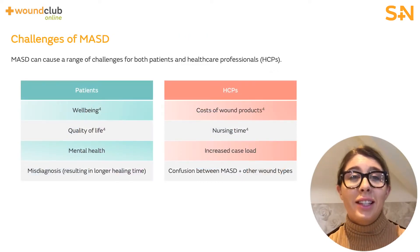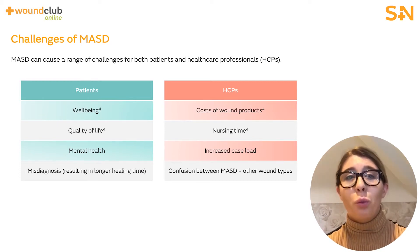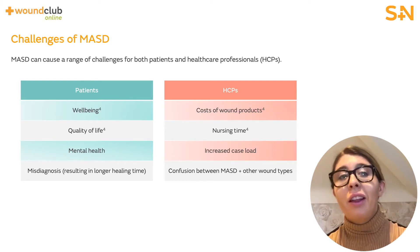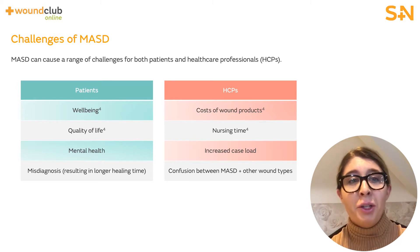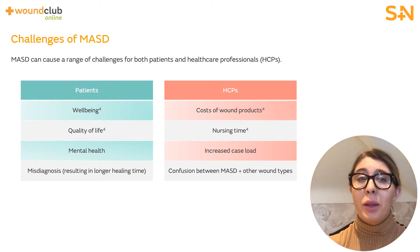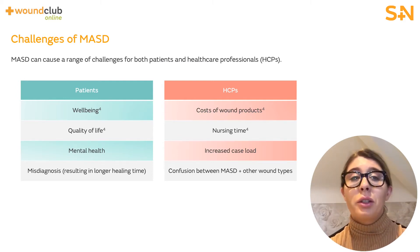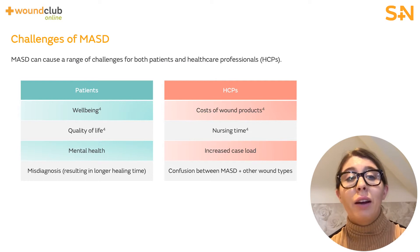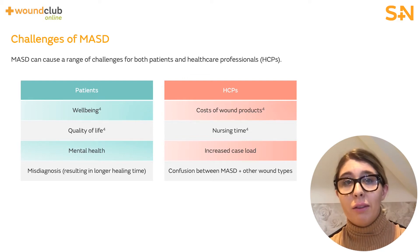MASD represents a significant problem and can have a negative effect on patients' wellbeing and quality of life. The development of MASD involves more than just bodily fluids alone. Rather, skin damage is attributable to multiple factors including chemical irritants within the moisture source, its pH, associated microorganisms on the skin surface, and mechanical factors such as friction. This can cause significant distress to the patient and affect their wellbeing and quality of life.